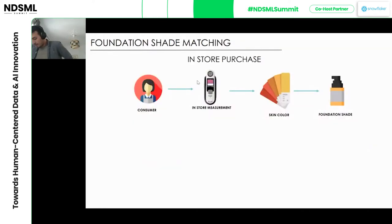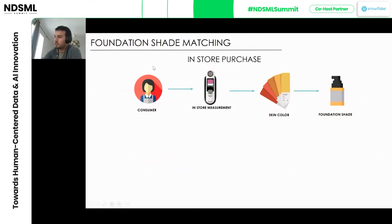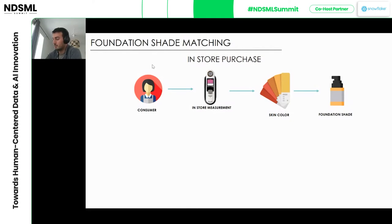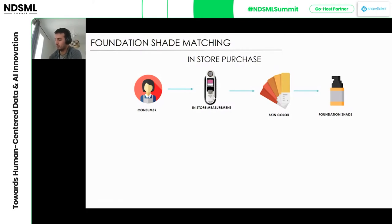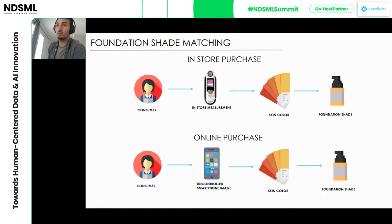What I'll focus on instead is foundation matching, because if you're not familiar with the cosmetics market, an important issue when purchasing a foundation is that the ranges are really large and you have to find the right foundation for your skin tone. This is especially difficult when purchasing online because you cannot physically try the product. This is why diagnostic tools are particularly valuable. This kind of diagnostic is already run in stores — a beauty advisor performs a skin color measurement and recommends a foundation shade. But how does this work in online retail? You have to use a smartphone image instead of a physical measurement.